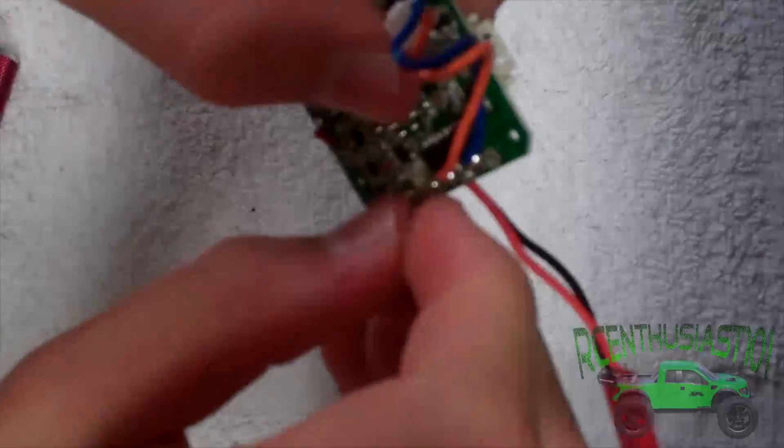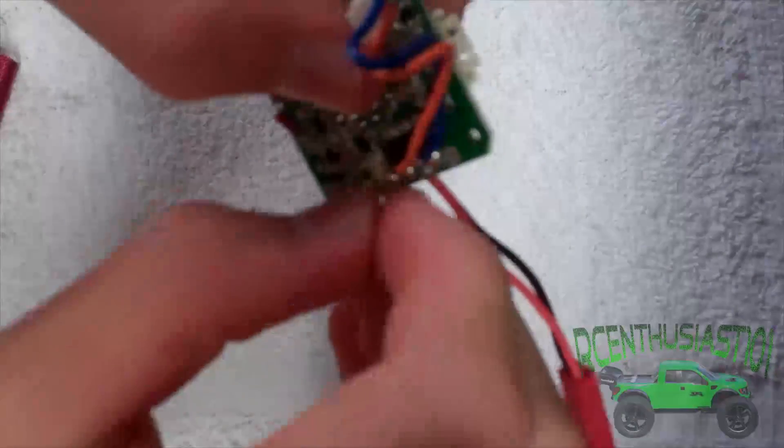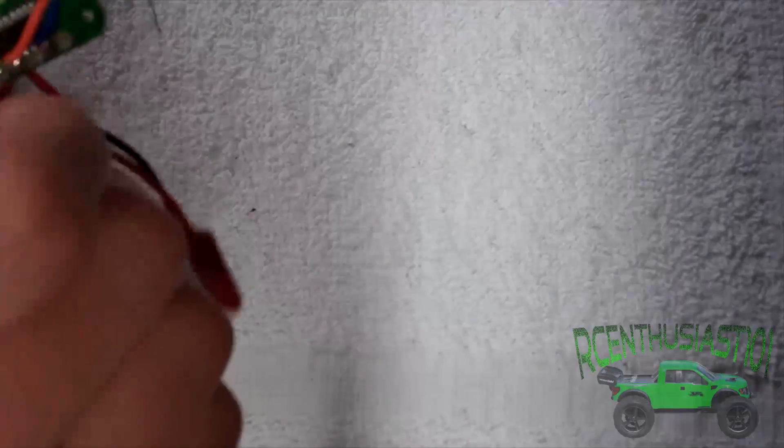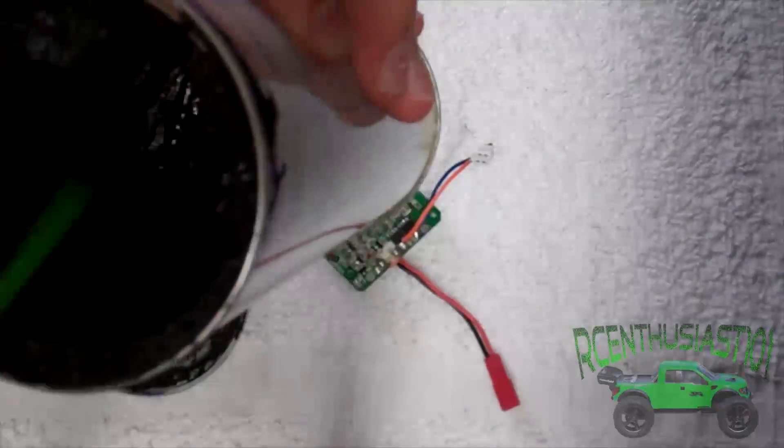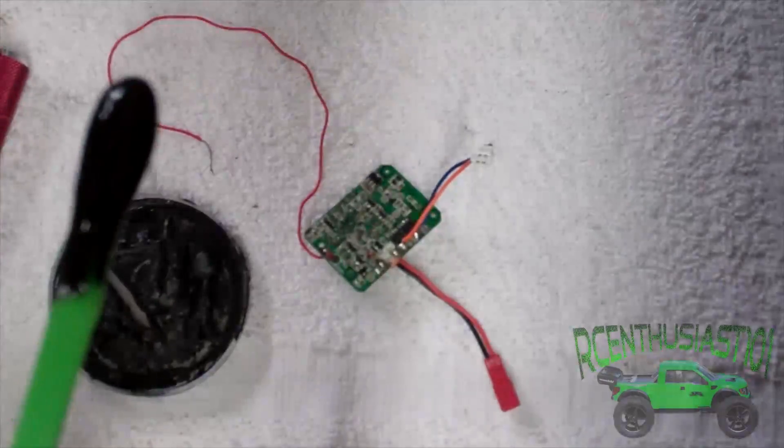And just roll them up and we'll test this out but it's a good idea to put some sort of electrical tape or just take something and just roll a bit of Plasti Dip and put it over that.